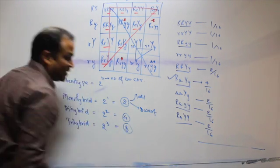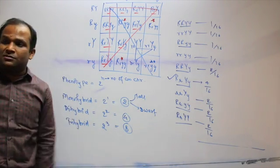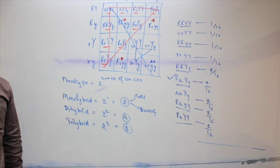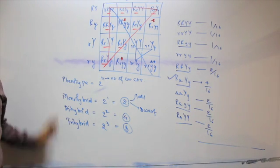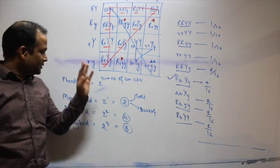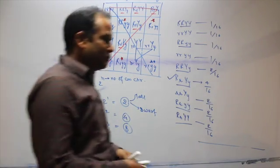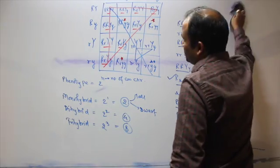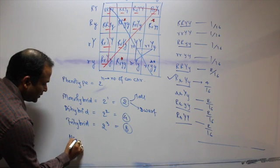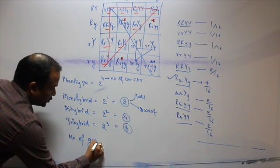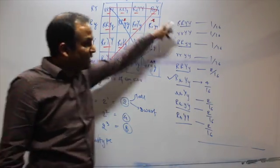Do you understand? How many phenotypes are possible? 2 to the power 5, directly. This is the number of phenotypes. And if I ask you the number of genotypes — number of phenotypes, total possible.